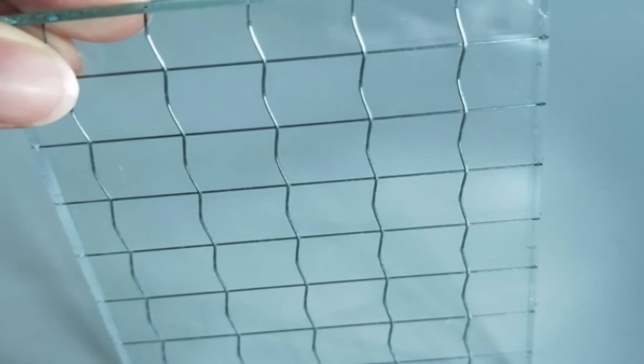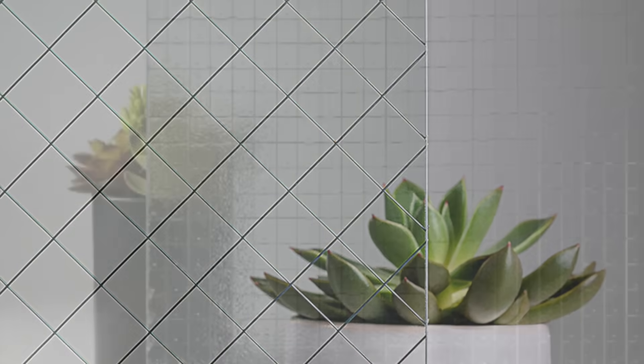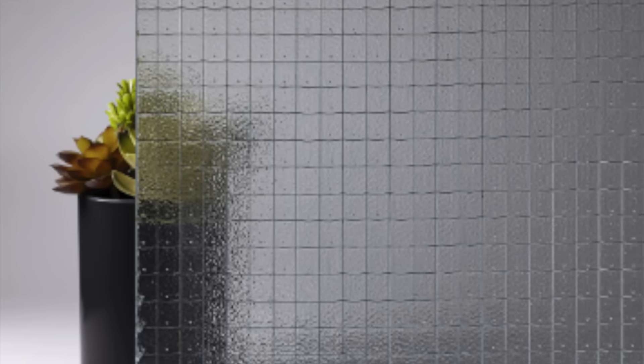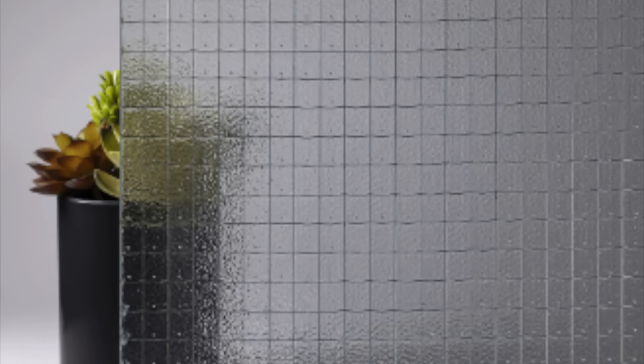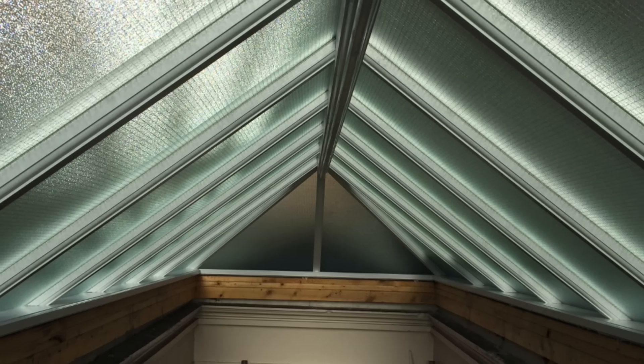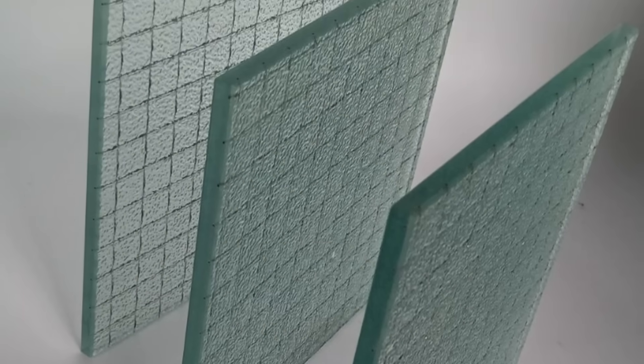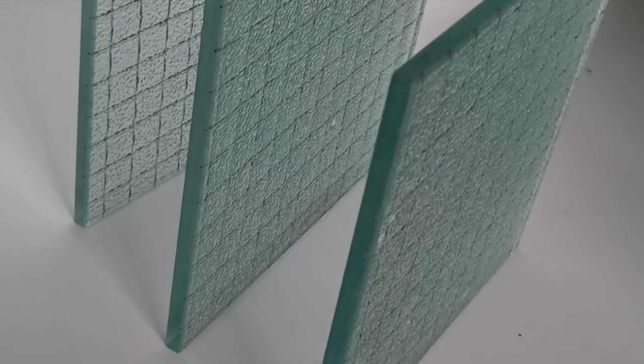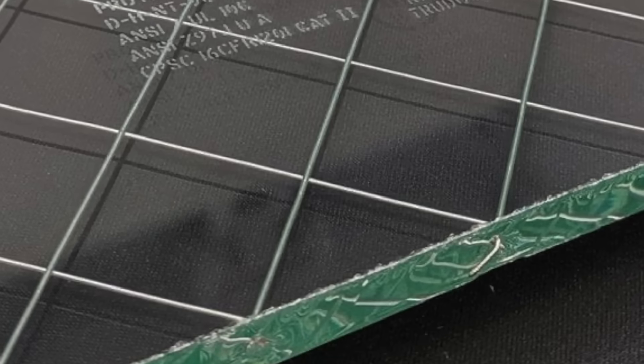In recent years, the use of wired glass in certain applications has declined due to safety concerns, and it is often replaced with other types of safety glass, such as laminated glass. Despite these concerns, wired glass is still used in some fire-rated applications due to its ability to withstand high temperatures and prevent the spread of fire.